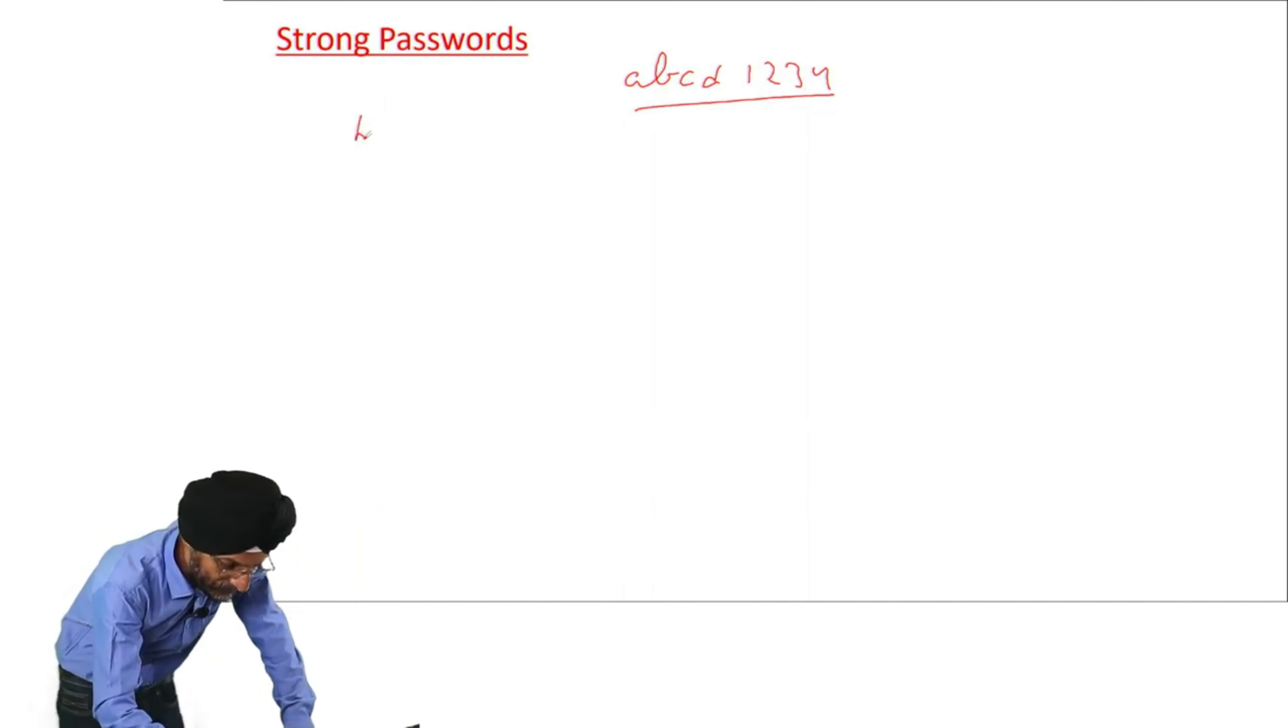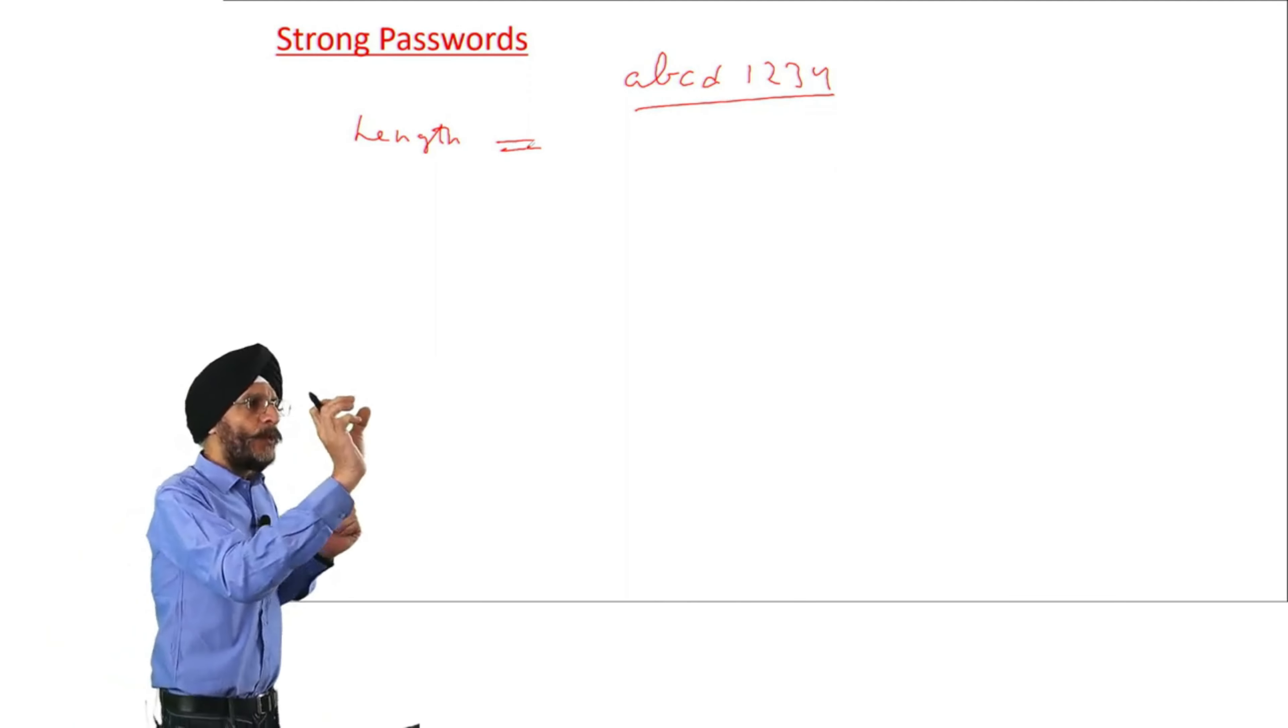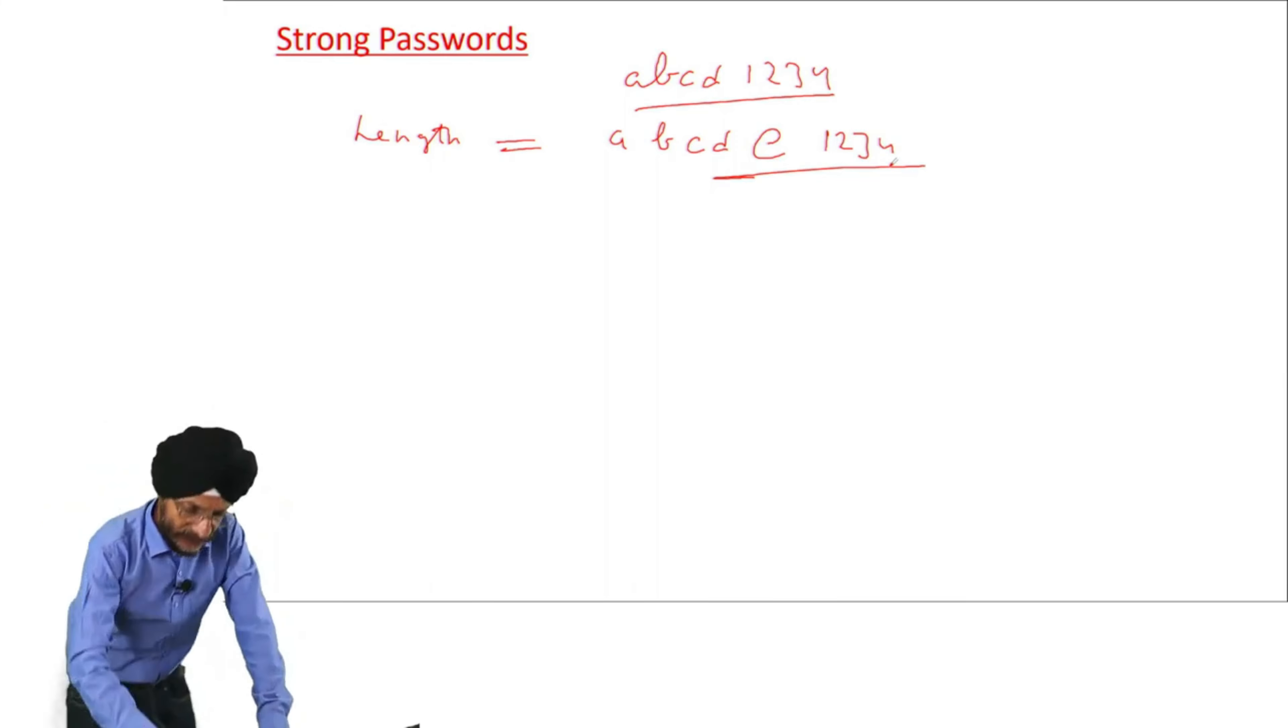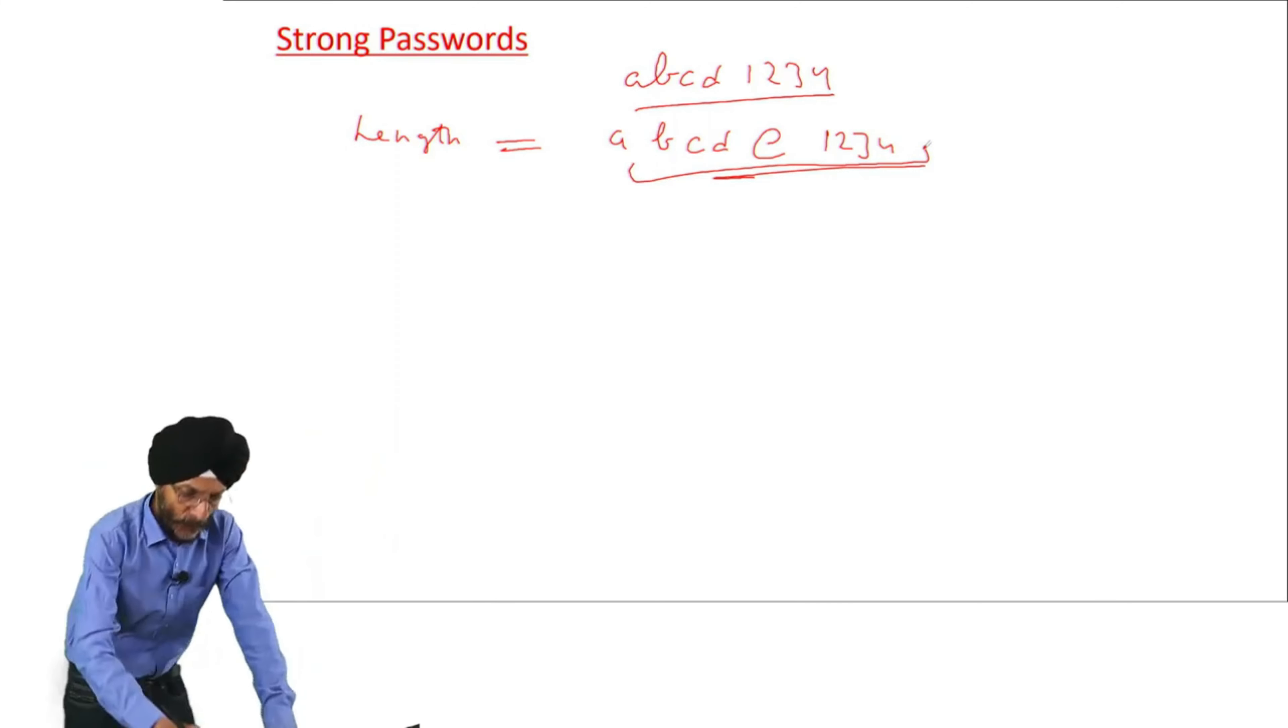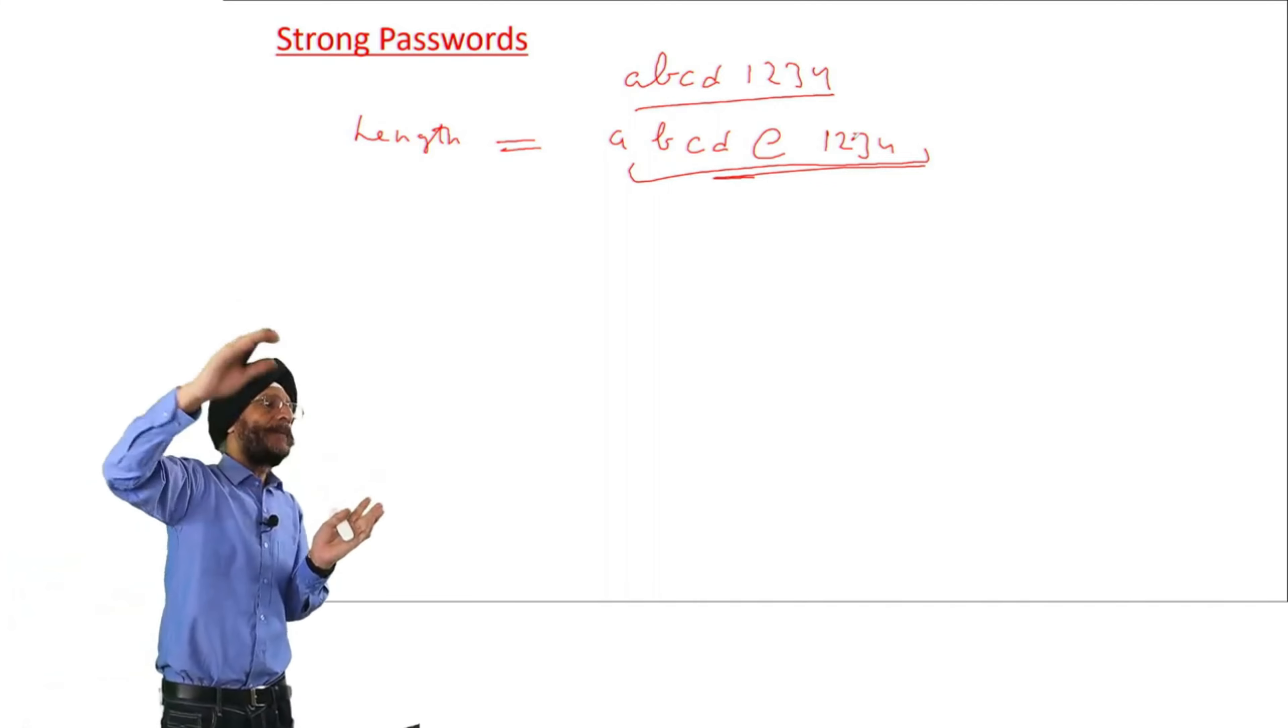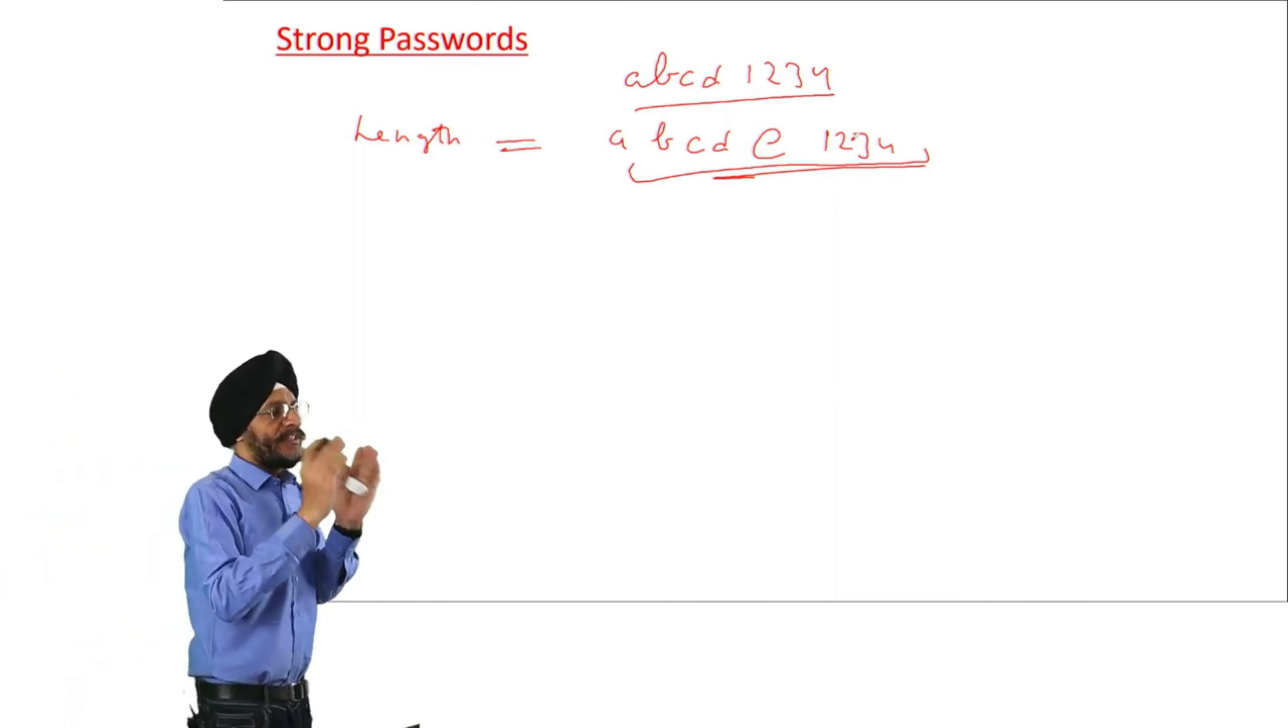First is length of the password. Length of the password should be more than 8. That is we can keep it as A, B, C, D at the rate 1, 2, 3, 4. That is total length. I am not suggesting that these types of passwords should be maintained. We will discuss it in more in detail. That is the length of the password should be at least 8 characters long. More the characters, it will be good. But if we keep very big password, the characters are very lengthy, it may not be easy for us to remember.